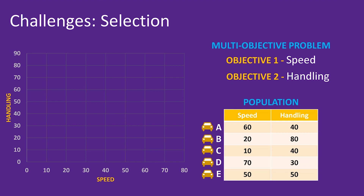Let's plot the population of solutions to the multi-objective problem for a better look. This is called a plot of the objective space, because we are plotting the objective values for each vehicle. Each glowing marker on the plot represents the objective values of solutions in our population — these have been labelled appropriately. On the x-axis, we have the speed of a vehicle, meaning the further to the right a marker is, the faster the vehicle is. On the y-axis, we have the handling of a vehicle, meaning the higher up a marker is, the better the handling is.